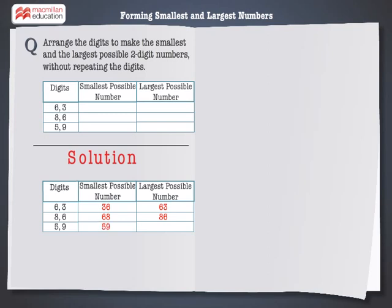Now, to form the largest number with 5 and 9, put the larger digit in the tens place. So, the largest number formed with the digits 5 and 9 is 95. The final table is represented here.